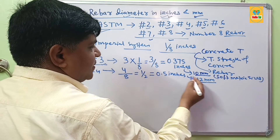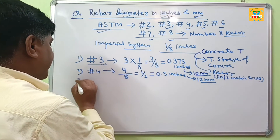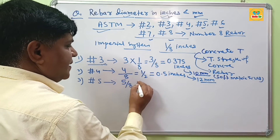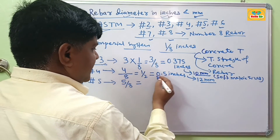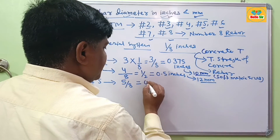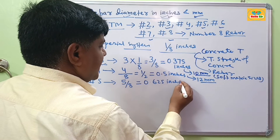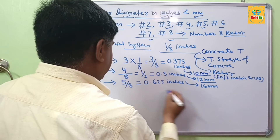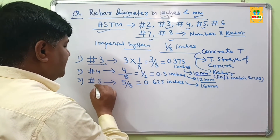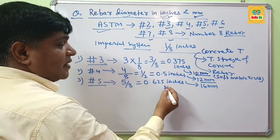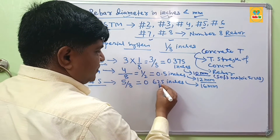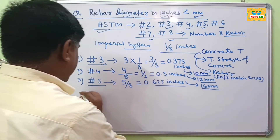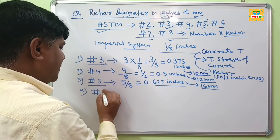For number 5 rebar, this equals 5/8. If you convert this to inches, it equals 0.625 inches, and this equals about 16 mm. So the diameter of number 5 rebar is 0.625 inches or 16 mm.